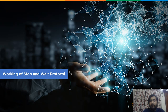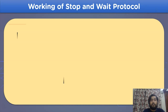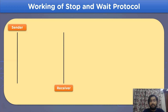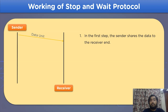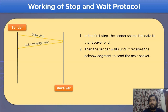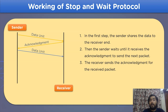Using the previous two headings we can easily determine the steps involved in the working. We have two sides: the sender and the receiver. The first step is to send data from the sender side to the receiver end. After the receiver side has used the data, it will send the acknowledgement signal, meanwhile the sender side has to wait for that acknowledgement signal.